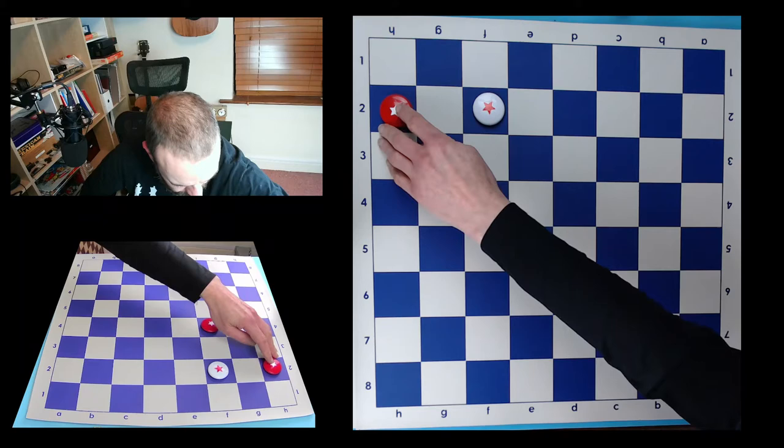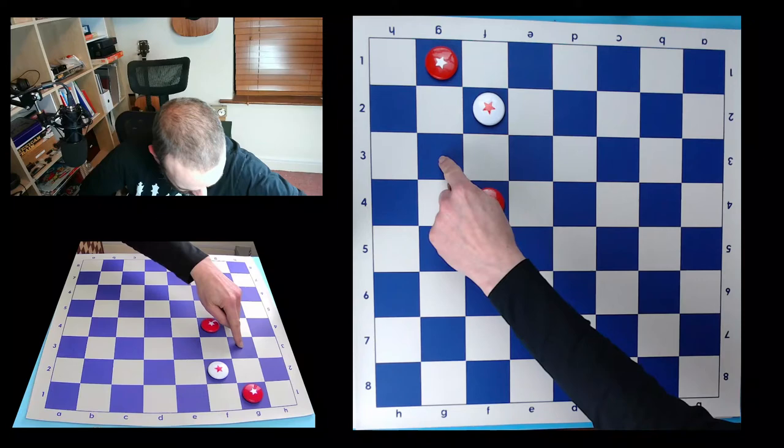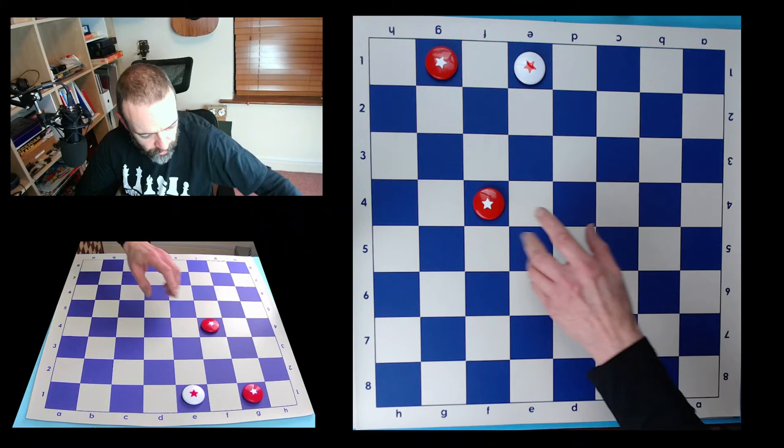Now, our king in the double corner gets in behind, takes away this square, prevents him getting back to the double corner. Only square now is here.